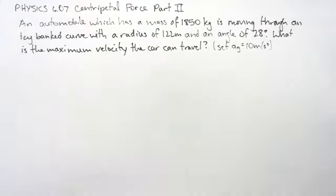Hello, welcome to physics lesson 6.07 centripetal force part two problems. We are going to look at a car which is on a banked curve, has a radius of 122 meters and an angle of 28 degrees.